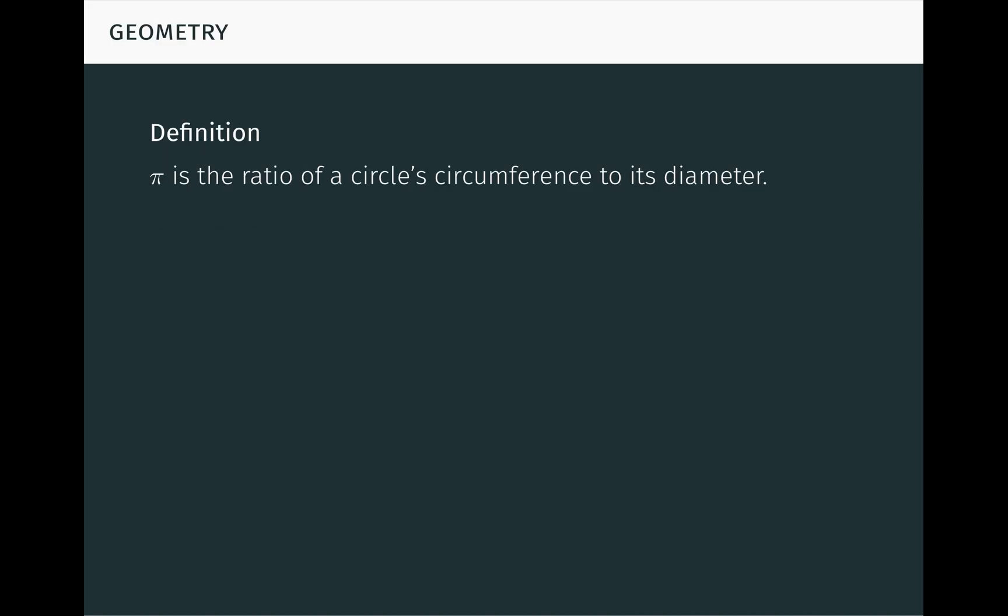Well, you may recall a geometrical definition of pi from elementary school or middle school, which says that pi is the ratio of a circle's circumference to its diameter. If we diagram this, we have a circle with circumference c and diameter d, and pi is just the number c over d.